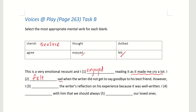Sentence 3: 'However, I ___ the writer's reflection on his experience because it was well written.' I agree — but there's no 'with' after. I thought the writer's reflection. I dislike the writer's reflection — but it was well written, so he can't dislike it. The answer is 'thought.' Note that 'agree' needs to be followed by 'with,' so it doesn't fit here.